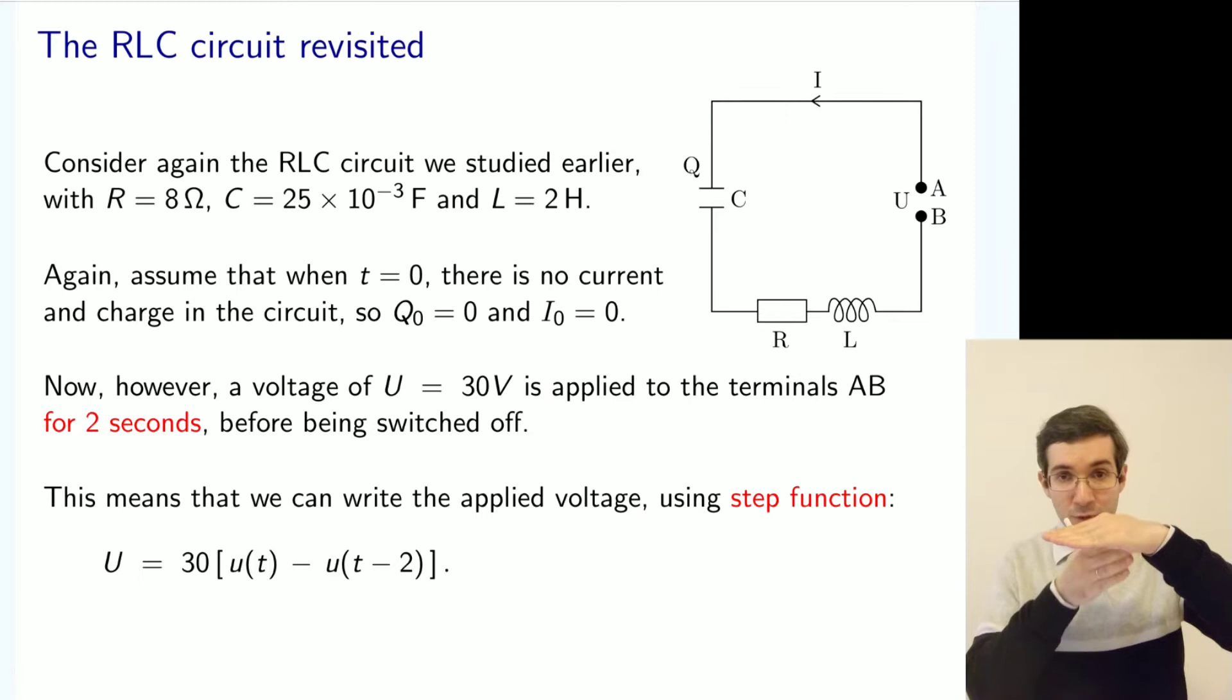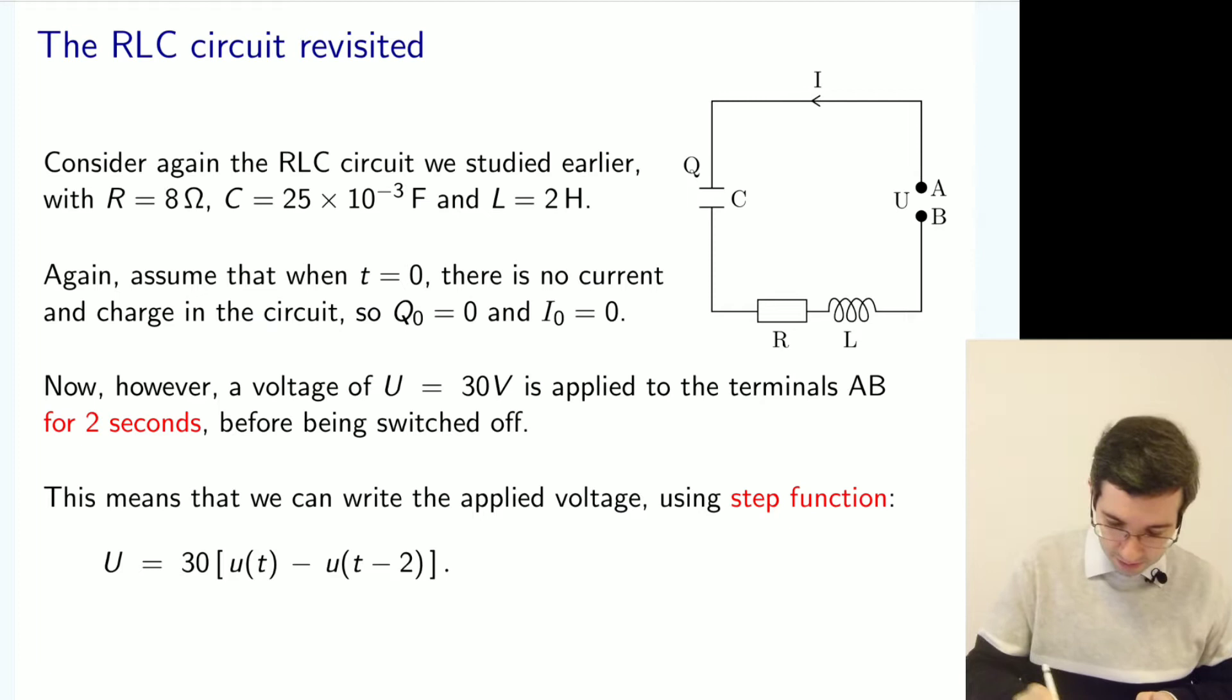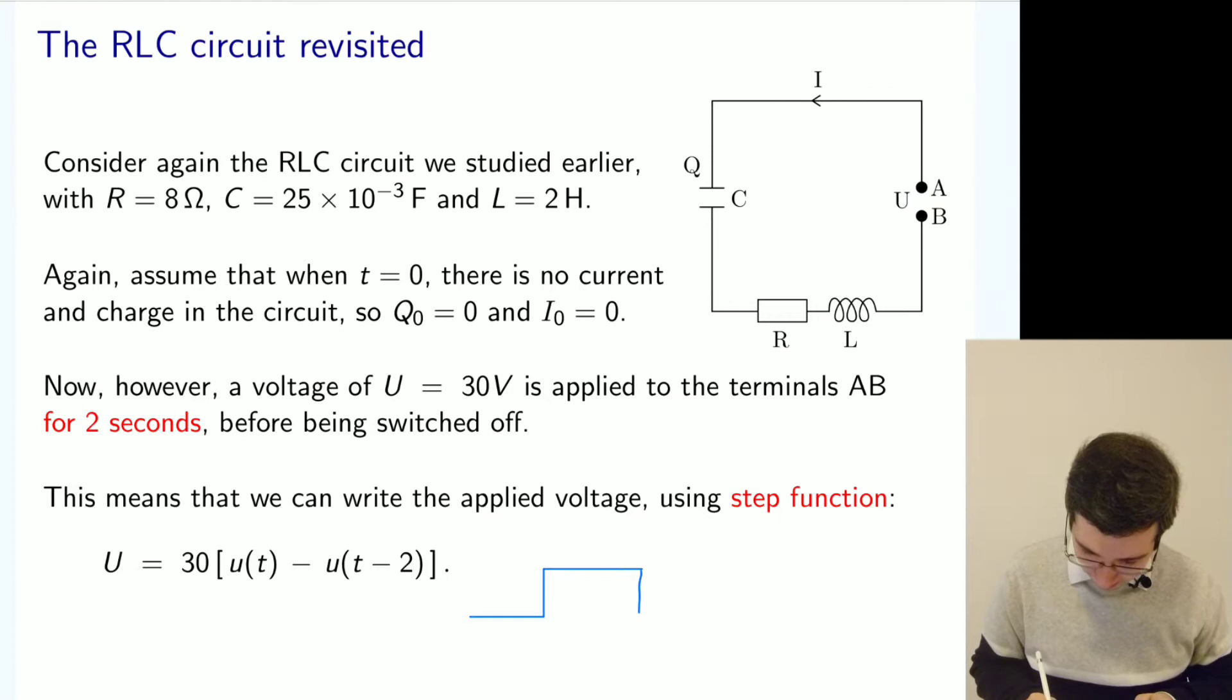So we have a voltage which appeared at time zero and then disappeared after time. So this was time zero, this is time two...